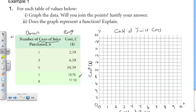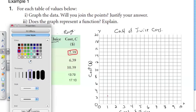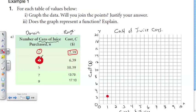Now it's a matter of plotting our graph. Let's take our first point: one can of juice is $2.39, so somewhere here. Three cans is $6.39, somewhere here. Five cans is $10.39. Seven cans is $13.79, so right about there. And nine cans are $17.10, pretty close to here.